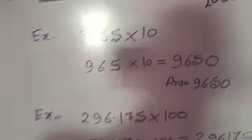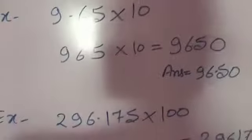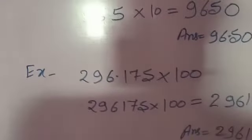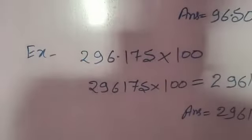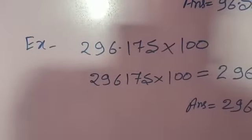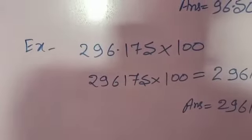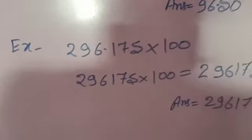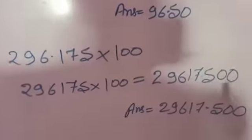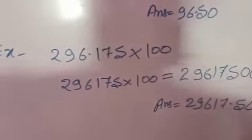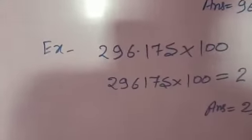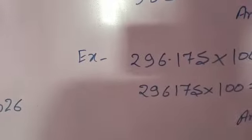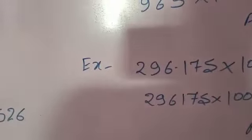By the same process we can multiply by more than 100 — such as 1000, 10000, and so on — by increasing the number of zeros accordingly. Thank you, and have a nice day.